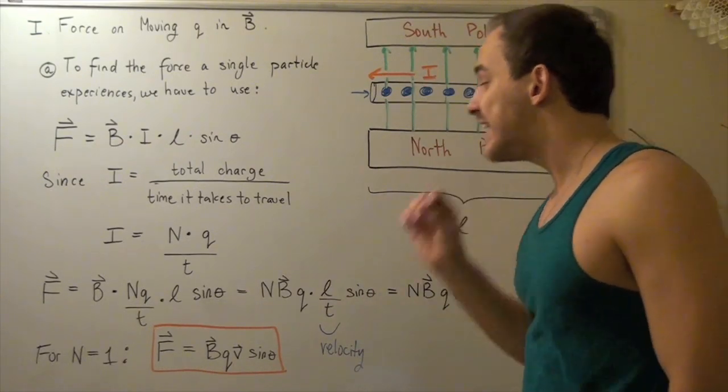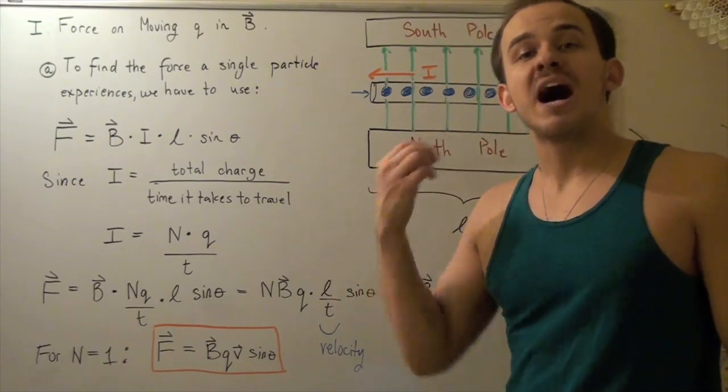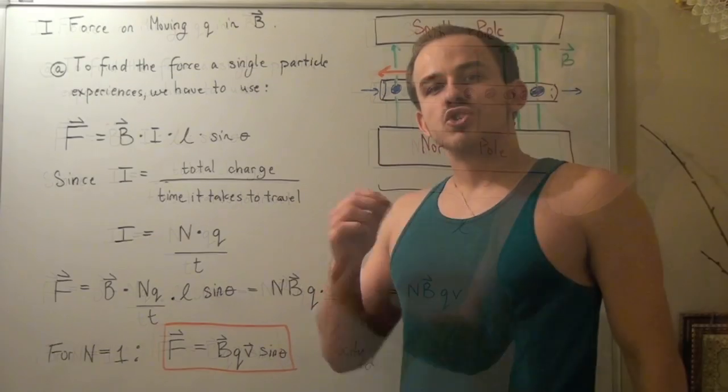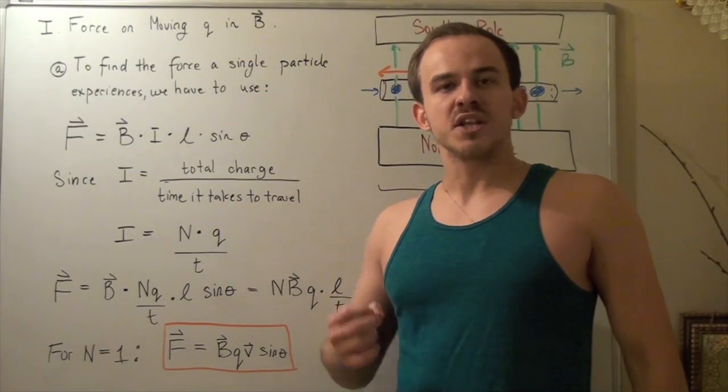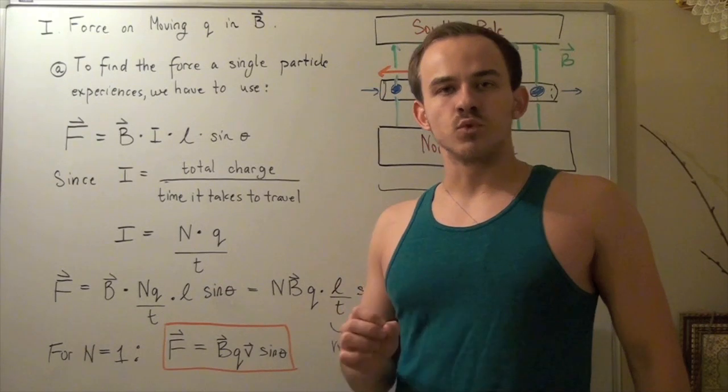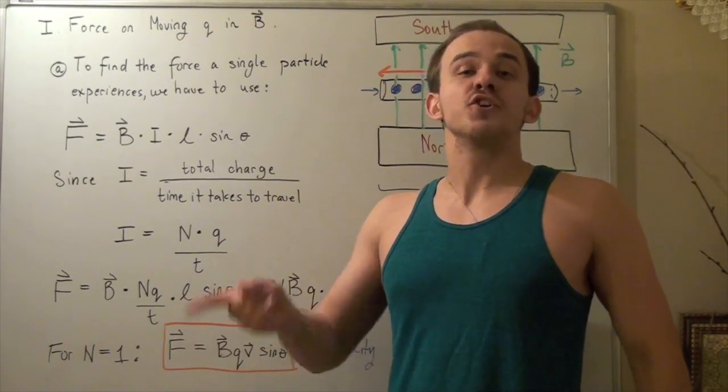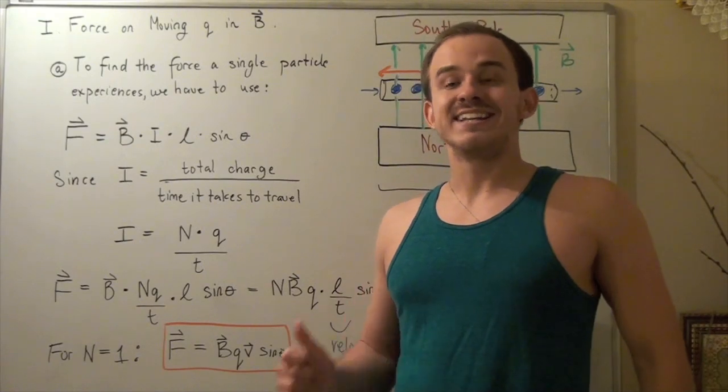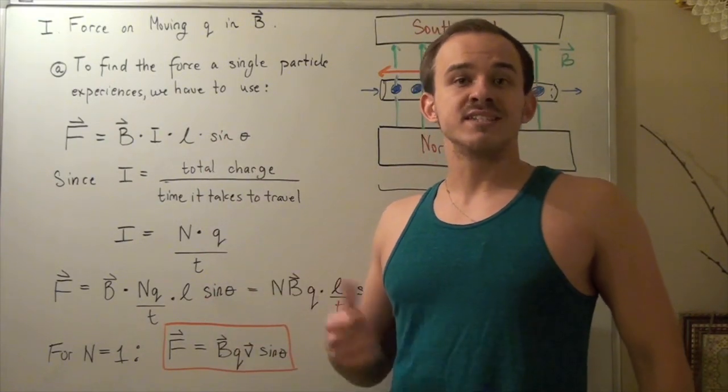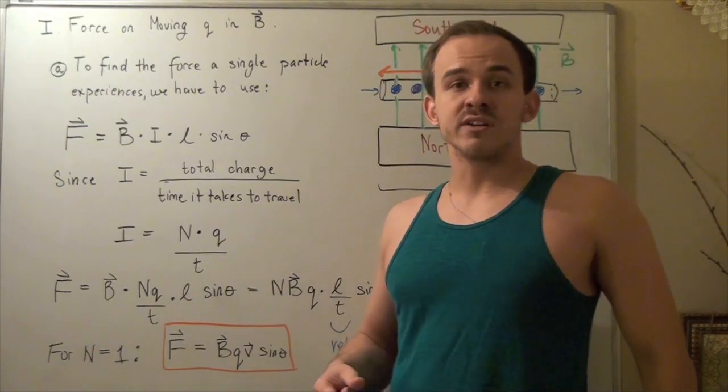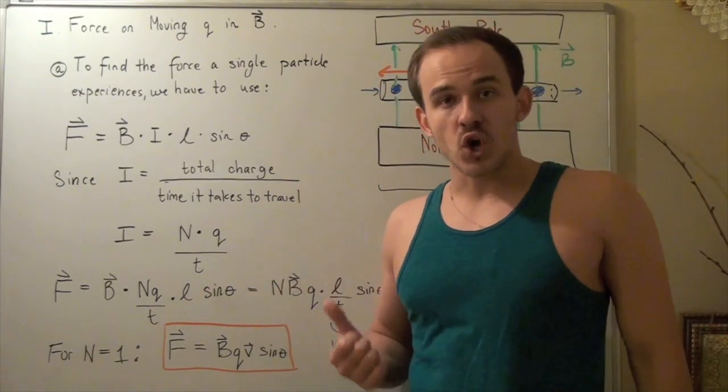But now, our right-hand rule only works for positive particles. If instead we're dealing with negative particles, I can still apply my right-hand rule. Except, at the end, I have to switch my directions, reverse my directions. If I get upward for a negative particle, it's actually downward. If I get inward for a negative particle, it's actually outward. And so on.